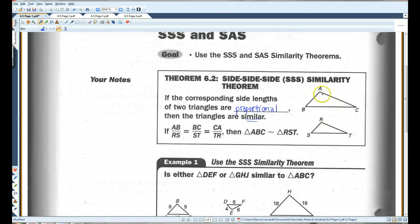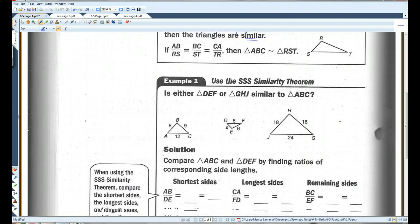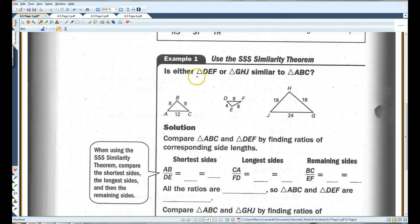Okay, so in this case, if this side and this side and this side are proportional to these three sides, then these two triangles are similar. So, for example, is either triangle DEF or triangle GHJ similar to triangle ABC?